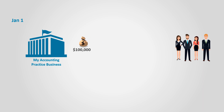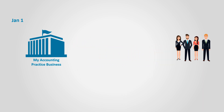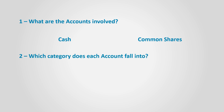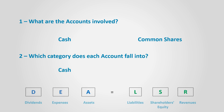On January 1st, the business issued common shares to shareholders for $100,000. To analyze any transaction, we ask ourselves five questions. Number one: what are the accounts involved in this transaction? Since the business received cash, cash is involved, and it issued shares, so the other account is common shares. Number two: which category does each account fall into? Cash is owned by the business, so it falls in the assets category. Common shares falls in the shareholders' equity.